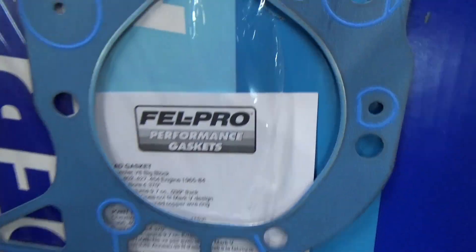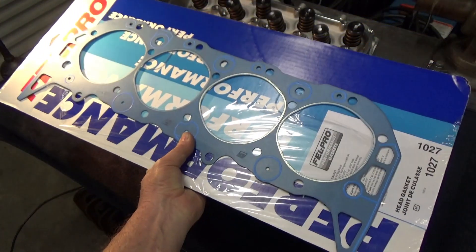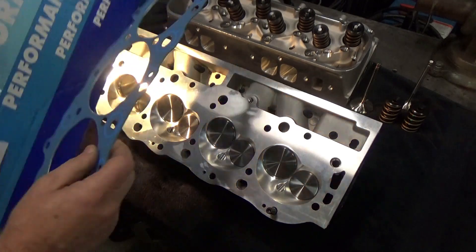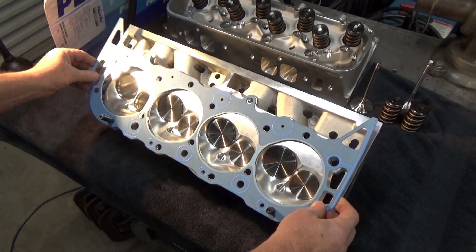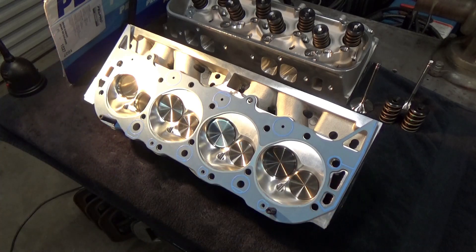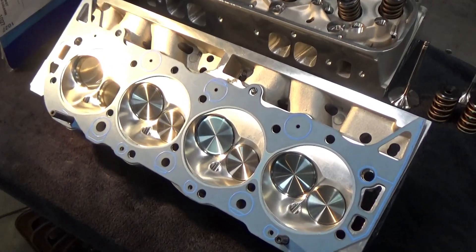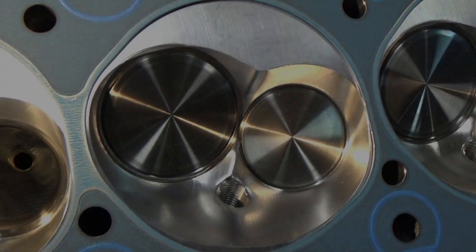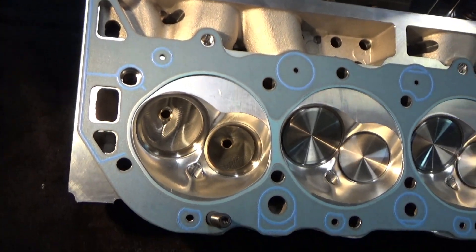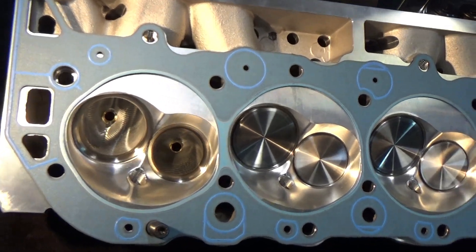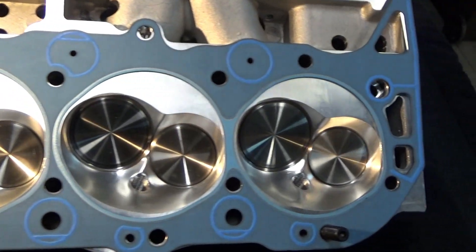Now the head gasket I got is a Fel-Pro 1027 and it's for aluminum heads and they claim it's up to a thousand horsepower. I just love the way it follows the contour of the chamber so well and the finish on those chambers, it just, it's a very nice looking head.